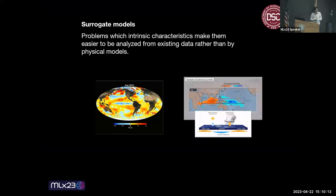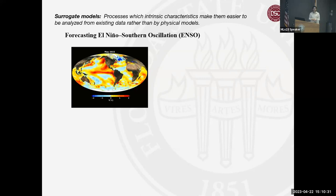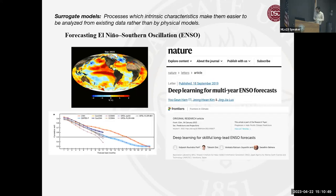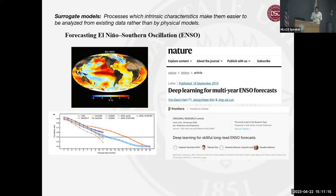Moving into the second group, surrogate models — the idea is that we have problems well suited to solve with machine learning. The example I have here, which many of you may be familiar with, is forecasting El Niño–Southern Oscillation (ENSO). This is a pattern in the ocean that changes depending on the year, but it affects the whole climate of the planet. In the classic approach we use general circulation models, but now we are able to predict it with very good skill using machine learning, represented by the orange line, versus the other lines which are classic global circulation models — and now we can forecast it in a much cheaper way.